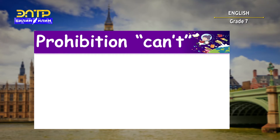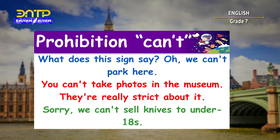For prohibition, we use 'can't' and 'mustn't' to show that something is prohibited — it is not allowed. We use 'can't' to talk about something that is against the rules, particularly when we didn't make the rules. For example: What does the sign say? Oh, we can't park here. Or, you can't take photos in the museum — they are really strict about it.